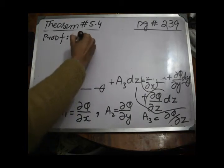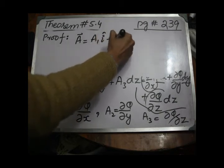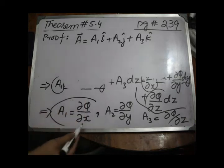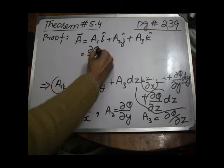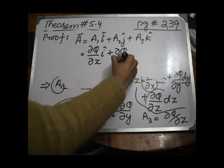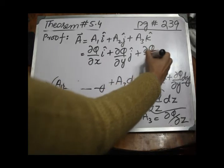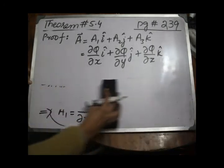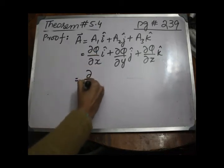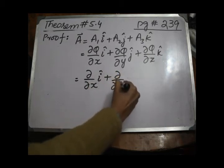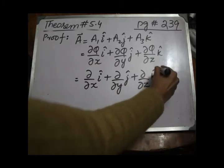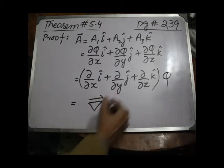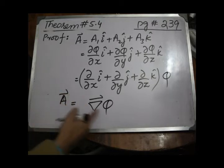Because we know that any vector a can be written as a1 unit vector i plus a2 unit vector j plus a3 unit vector k. Now substituting the values: a equals partial phi by partial x times i-hat, plus partial phi by partial y times j-hat, plus partial phi by partial z times k-hat. Factoring out phi, this entire expression equals del-phi. So we have proved that vector a equals del-phi.